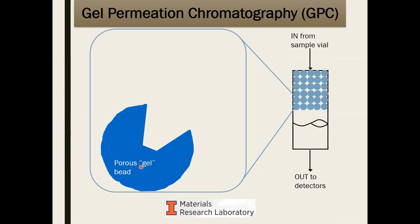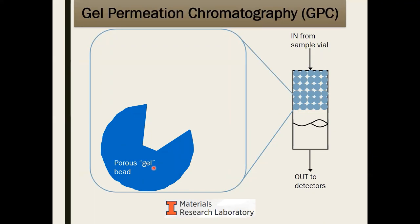These beads are what we call the gel — they're not always spherical. They normally have pores or channels going through them. They're called a gel because they're made of a cross-linked polymer. Cross-linking helps the bead hold its shape — think of a fishing net where everything is tied together into one large structure. For most GPCs you will encounter, the beads will be a polymer-based gel, though other non-polymer materials are possible.